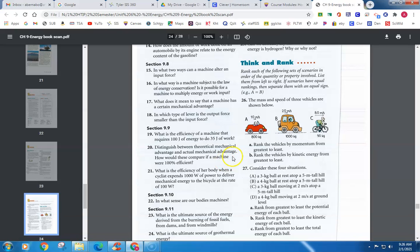21: What is the efficiency of her body when a cyclist expends 1,000 watts of power to deliver mechanical energy to a bicycle at a rate of 100 watts? That's going to be the output power over the input power, so that's 100 watts over 1,000 watts, which would give you 10%.